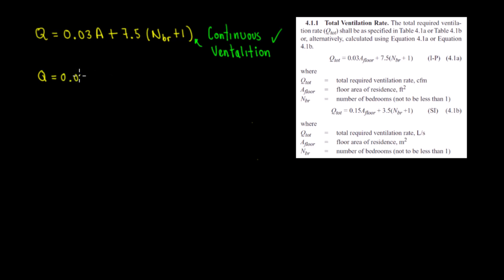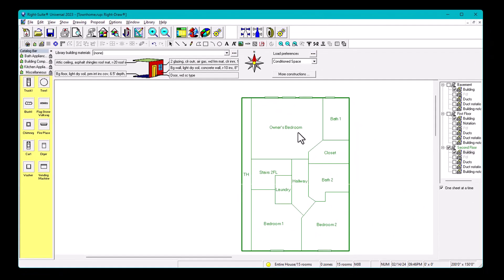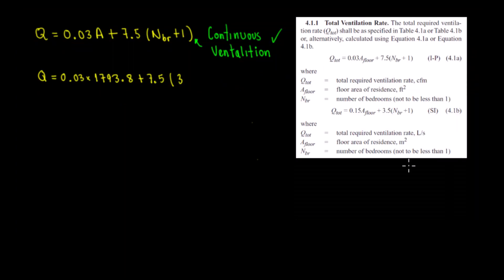So we're going to put 0.03 times 1793.8 square feet, plus 7.5 times the number of bedrooms. The number of bedrooms was three — one owner's bedroom, bedroom one, and bedroom two. From the other video, we had that room layout: three bedrooms total. So we put three bedrooms plus one.